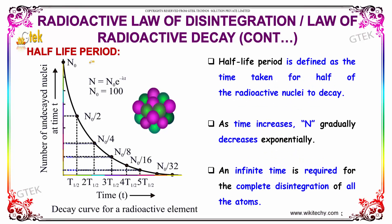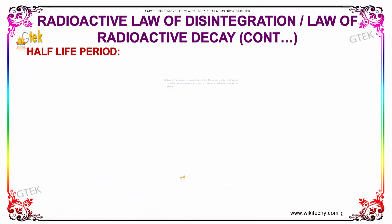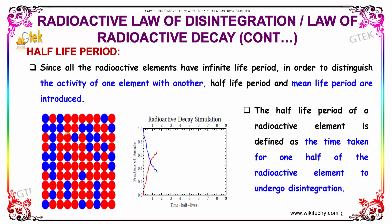Now we will talk about the half-life period. The half-life period is defined as the time taken for half the radioactive nuclei to decay. As time increases, N gradually decreases exponentially, and an infinite time is required for the complete disintegration of all the atoms. Since all radioactive elements have infinite lifetime, in order to distinguish the activity of one element from another, half-life period and mean life period are introduced.